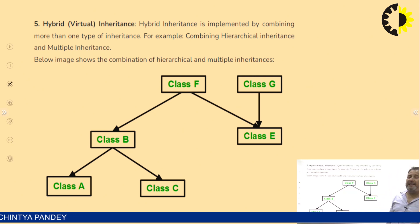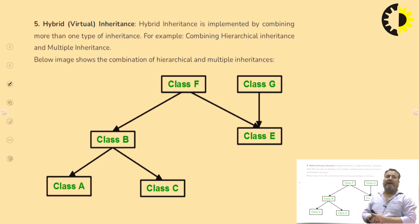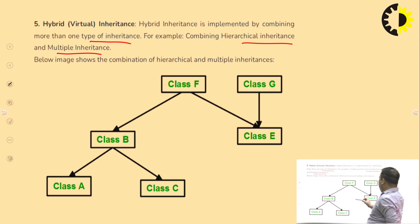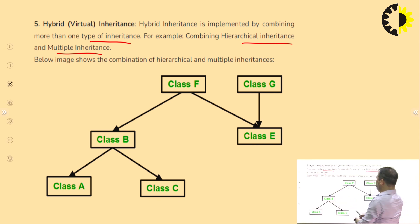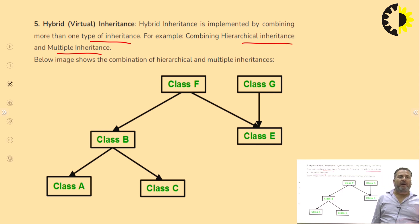Hybrid inheritance means combining more than one type of inheritance in a scenario. If a class exhibits more than one type of inheritance, it comes under hybrid inheritance. For example, combining hierarchical and multiple inheritance: class E has two base classes F and G, making it multiple inheritance; class F is further divided into B and E, and B into A and C, making it hierarchical as well. If a scenario uses more than two types of inheritance, it is called hybrid inheritance.